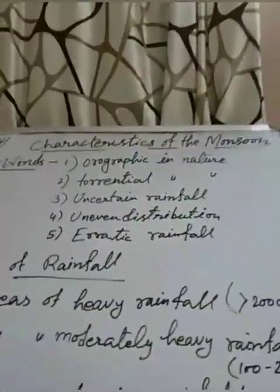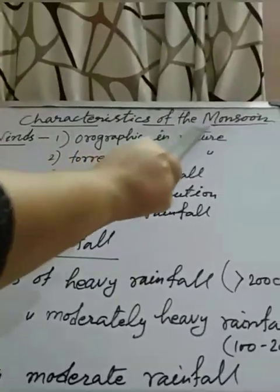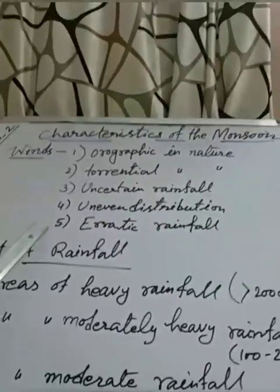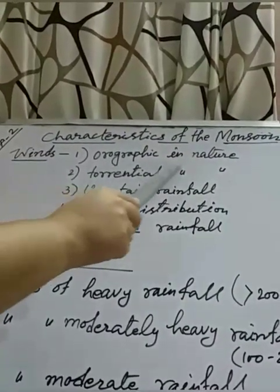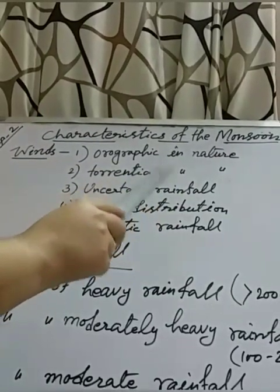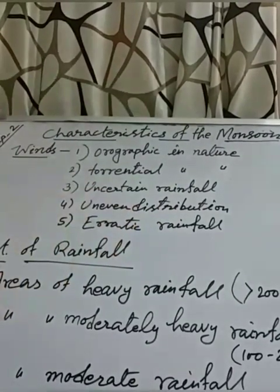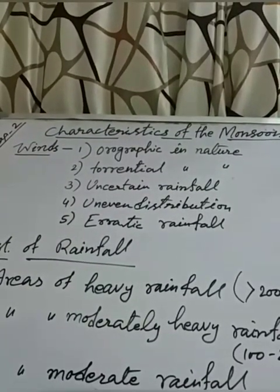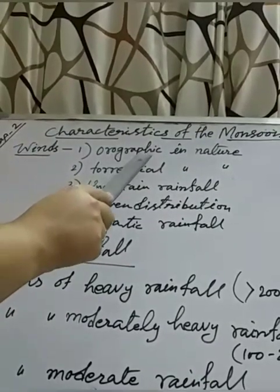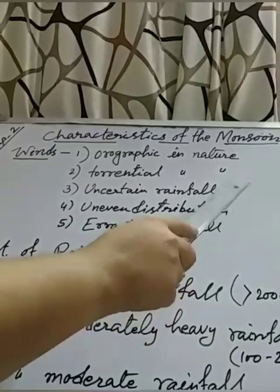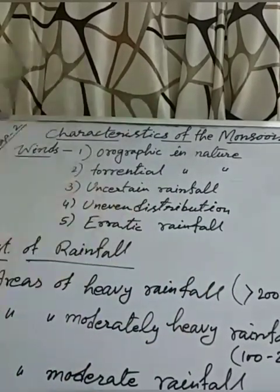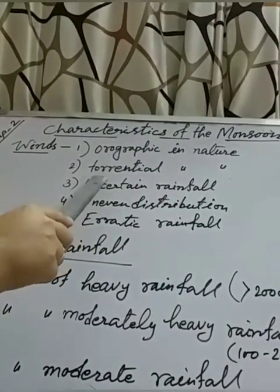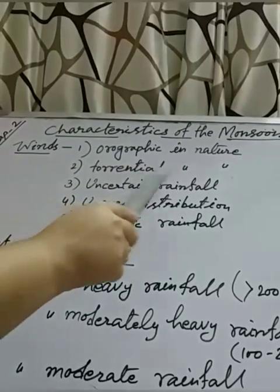Now the last part of this chapter is the characteristics of the monsoon winds. First, it is orographic in nature — this rainfall is developed due to the presence of a mountain, especially the Western Ghats, that is why it is called orographic. Second is torrential rainfall — it brings huge amounts of rain, so characteristic-wise it is torrential in nature. Third is uncertain rainfall — though the rainy season extends from June to September, it is still uncertain because it may come before June or at any time within those four months.